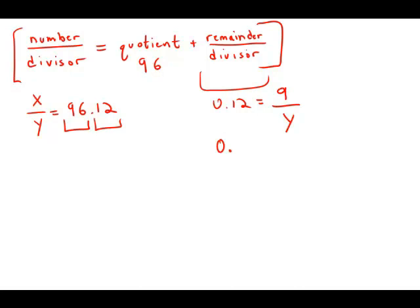Multiply both sides by y, and we get 0.12y equals 9. Divide both sides by 0.12.